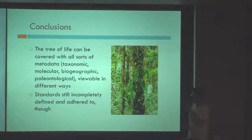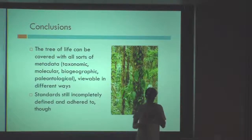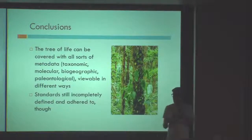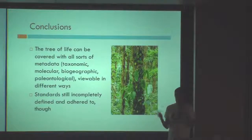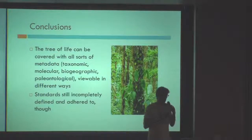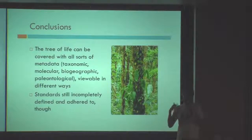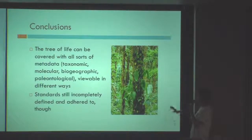You might have noticed during the talks that there are a number of different problems that keep coming up: how do we deal with identifiers, what are proper URIs, are we all using the same ones? Are we using the same predicates — how do they map onto each other? There was a lot of hacking still involved to make it all work, and hopefully this week we'll clear up these issues a little more. But at least we got some results, and I wanted to put that idea in your head: that we can use the Tree of Life to build stuff on top of it. Thank you.